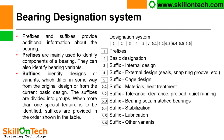Bearing designation system: prefixes and suffixes provide additional information about the bearing. Prefixes are mainly used to identify components or variants of a bearing. Suffixes identify design variants which differ from the original or current basic design. The suffixes are divided into groups, and when more than one special feature is to be identified, suffixes are provided in the order shown in the table.